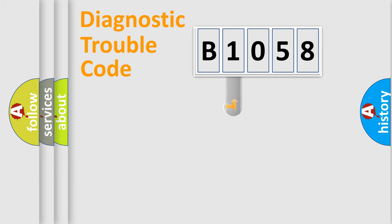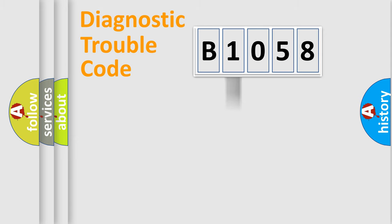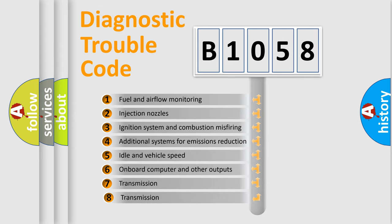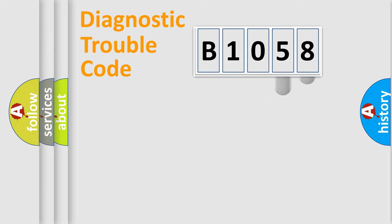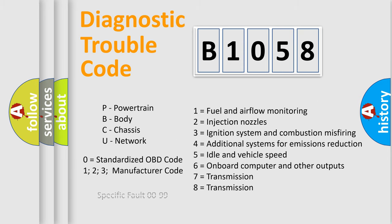This distribution is defined in the first character of the code. If the second character is expressed as zero, it is a standardized error. In the case of numbers 1, 2, or 3, it is a more specific car-manufacturer expression of the error. The third character specifies a subset of errors. Only the last two characters define the specific fault of the group. This division is valid only when the second character code is expressed by the number zero.